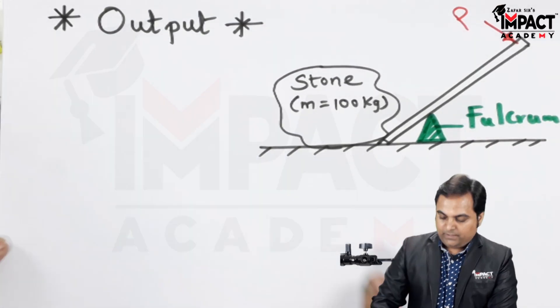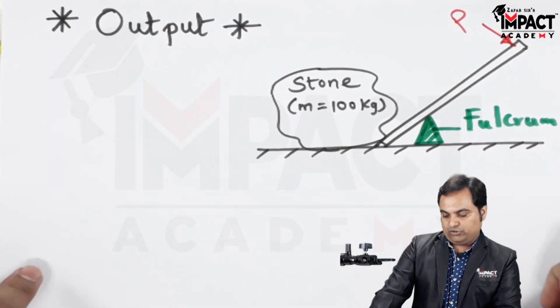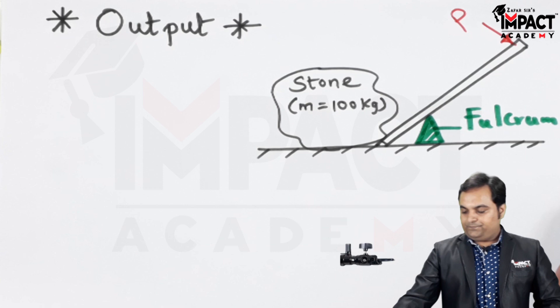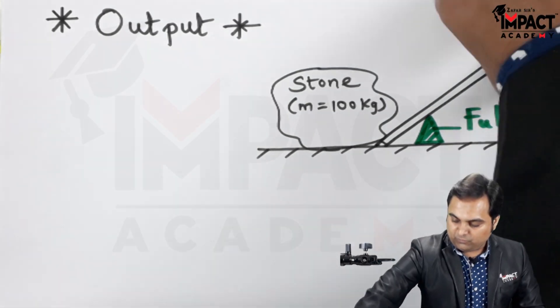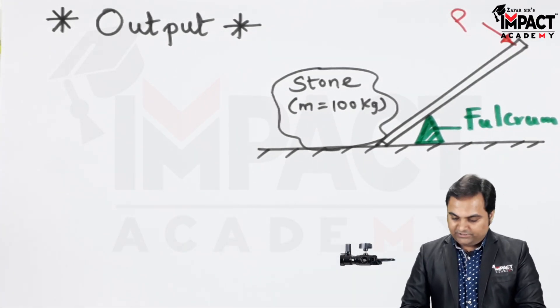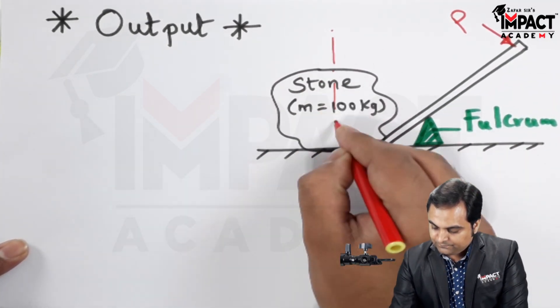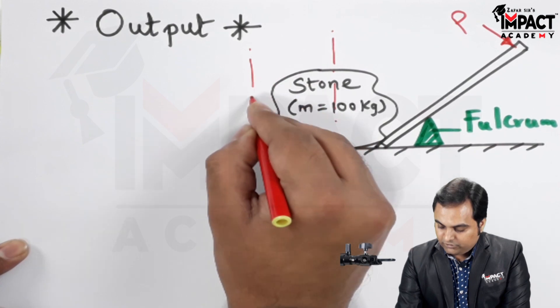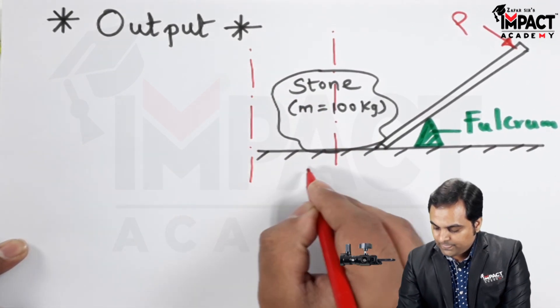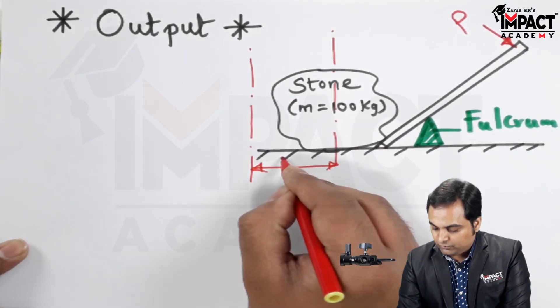Denoted by P, in order to move this stone or the heavy object. Now when this stone is moved with the help of this lever, it would be covering a certain distance, and I am assuming with the help of this center line that it has moved to this new position.